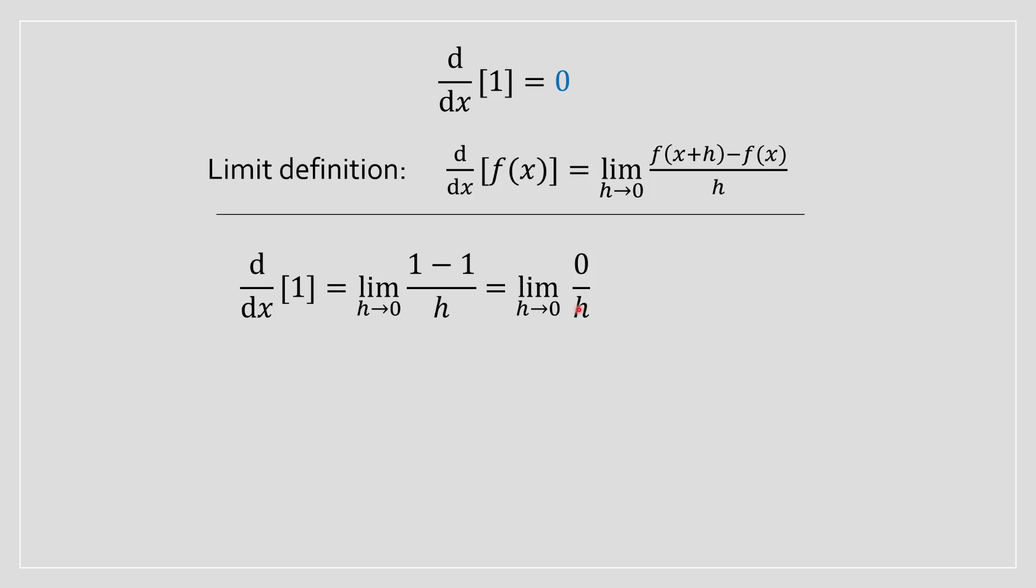Now, pretend you have a number 2, 3, in the denominator. If you basically divide 0 by any number, at any constant, you lot will obtain an answer of 0.